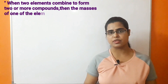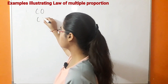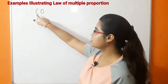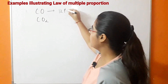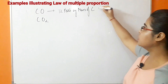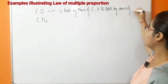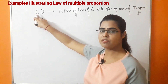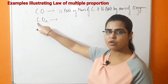In the case of carbon and oxygen, they combine together to form two types of compounds: carbon monoxide (CO) and carbon dioxide (CO₂). In CO, 12 parts by mass of carbon combine with 16 parts by mass of oxygen.